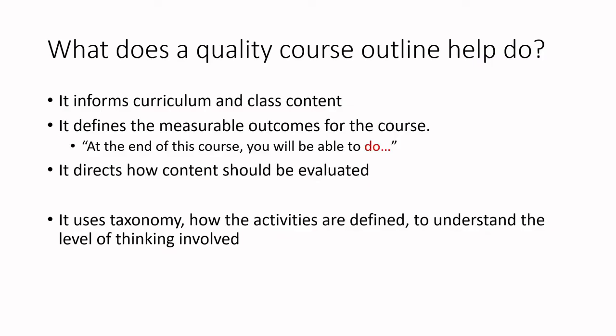So what does a quality course outline help you do? It informs your curriculum and class content, and as part of a CBET framework it defines the measurable outcomes for your course. At the end of this course you will be able to do these sorts of skills — using active verbs from Bloom's Taxonomy, whether you're focused on affective or psychomotor domains, picking the right verbs to describe what people are doing and thinking very deliberately about the wording. You give enough detail about the tasks and skills while still being broad enough to give the instructor some creative license.